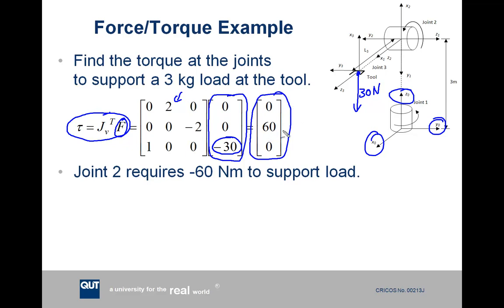So this is the torque experienced at joint number two, which is 60 newton meters. But we're interested in the torque we need the joint to apply to resist this, which is the opposite. So that's why we put a negative here. Joint two requires a torque of negative 60 newton meters to support the load in this static configuration.